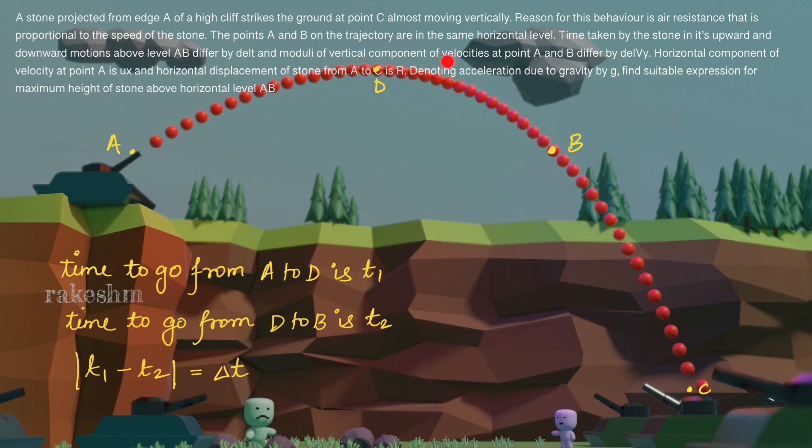The moduli of vertical component of velocities at point A and B differ by delta Vy. So if the vertical component of velocity at A is Va and the vertical component of velocity at B is Vb, then their difference Va minus Vb equals delta Vy. Horizontal component of velocity at point A is ux. So while this was being projected, its horizontal component of velocity was ux, and the horizontal displacement of the stone from A to C is capital R. So the horizontal displacement of the stone, you see from A to C, this is capital R.